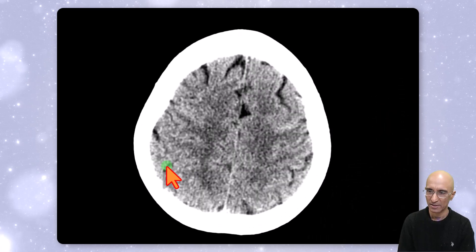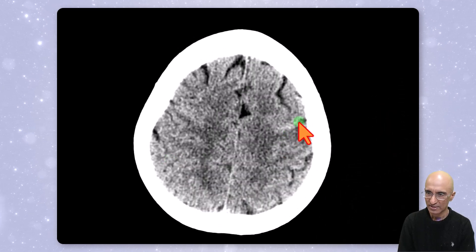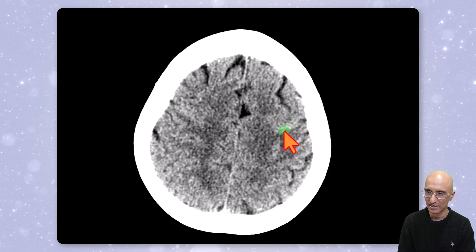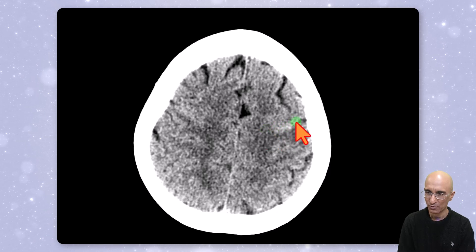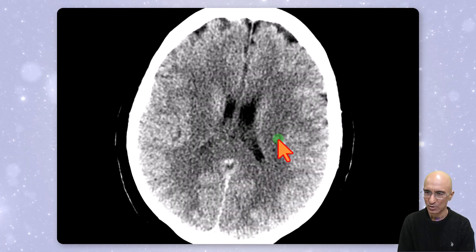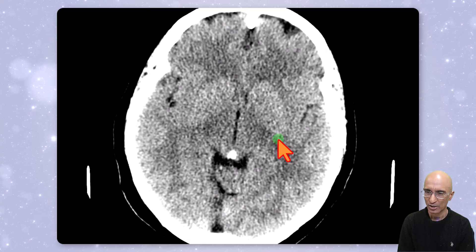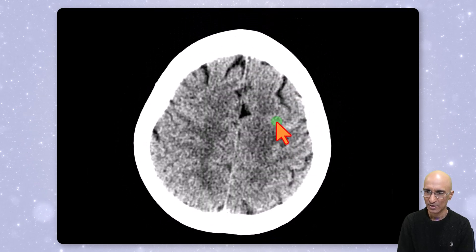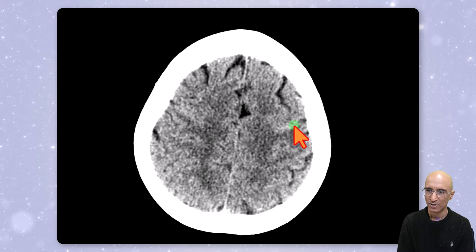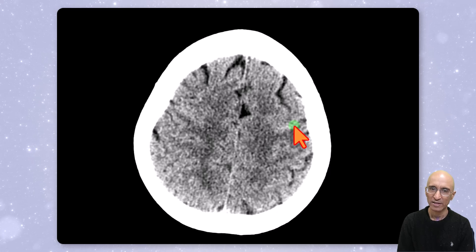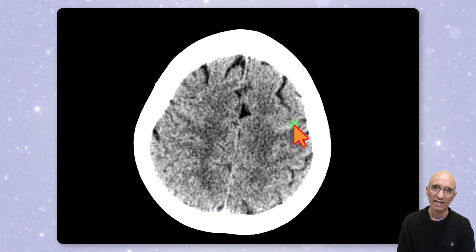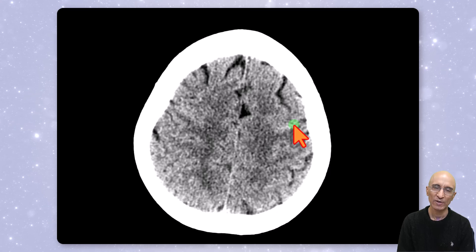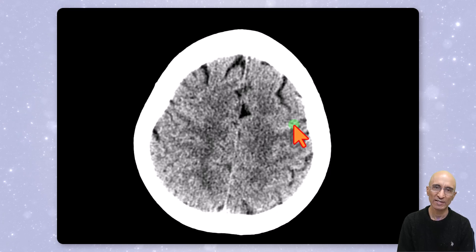On the CT head examination, as I scroll through, we can see subtle increased density in the left frontal sulcus. There were no other acute findings on the CT examination, so this finding was concerning for acute subarachnoid hemorrhage. The patient underwent a CT head angiogram, which was negative for any obvious aneurysm or vascular malformation.